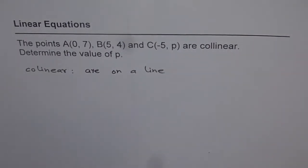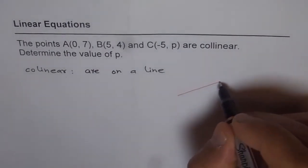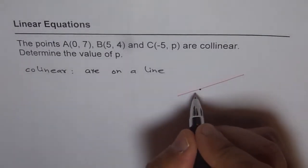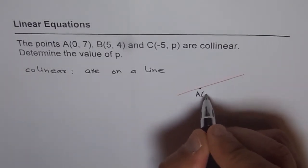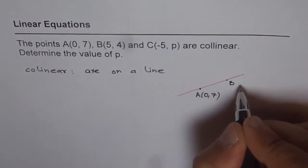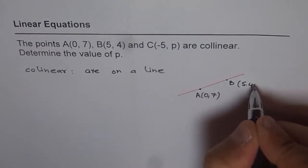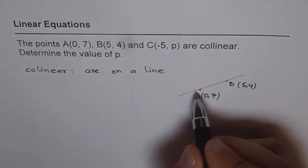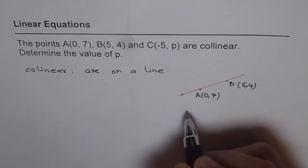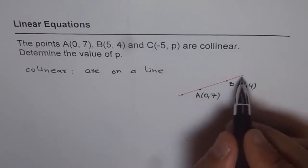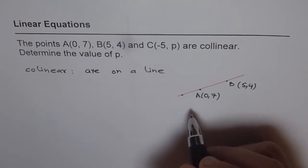So, let us assume that we have a line between point A and B. I am just drawing this randomly and saying that this point is A, which is (0, 7), and this point is B, which is (5, 4). Now, if point C is collinear, that means it should lie on the same line, somewhere here. So then, it is going to be collinear. If it does not lie on a line, then it is not collinear. So, how can you test it?